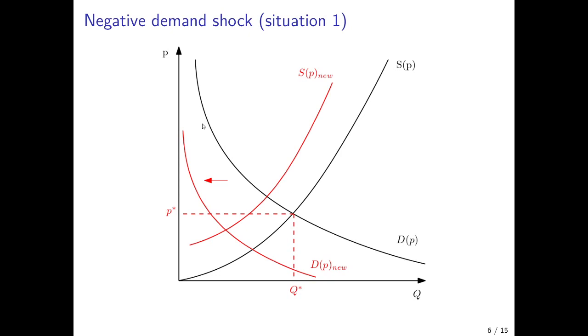We also have a negative demand shock. Two fundamentally different situations can occur with respect to the demand shock. Here we have situation one, which is a strong demand shock as compared to the supply shock. In this case, the demand curve would shift leftwards strongly such that at the new equilibrium we would have a lower market clearing price level and a much lower quantity traded. That's arguably what happened initially in the COVID-19 pandemic.